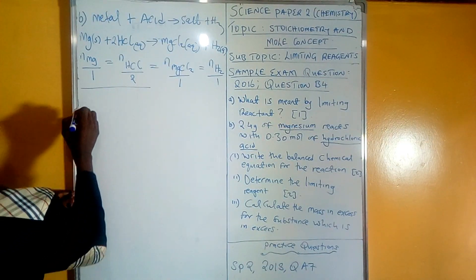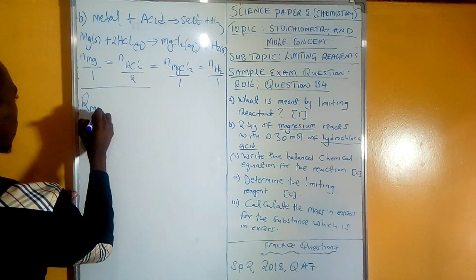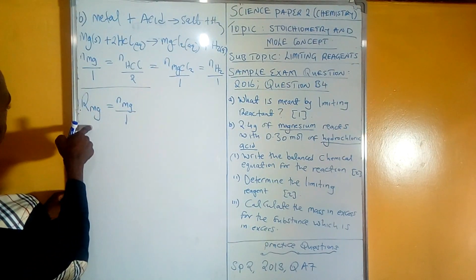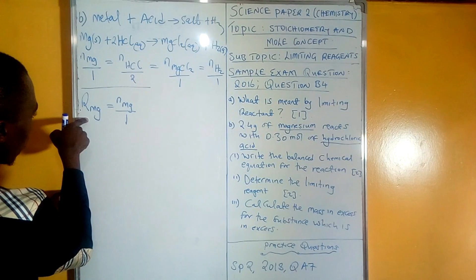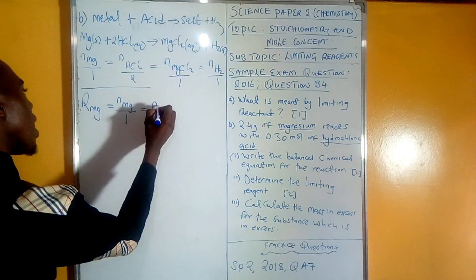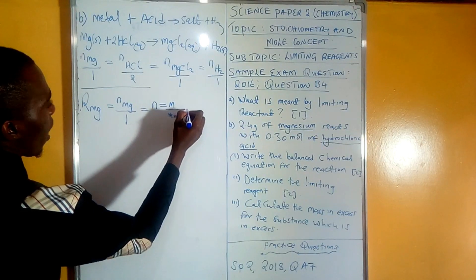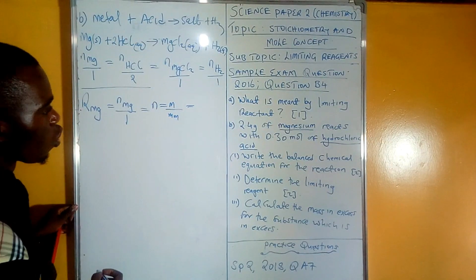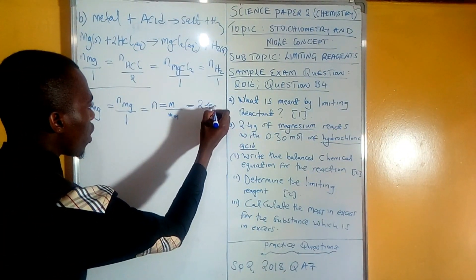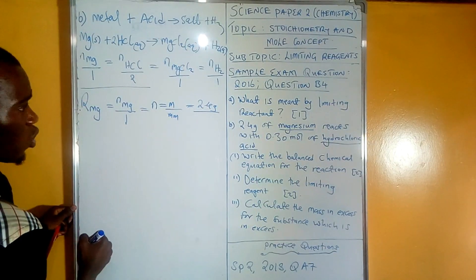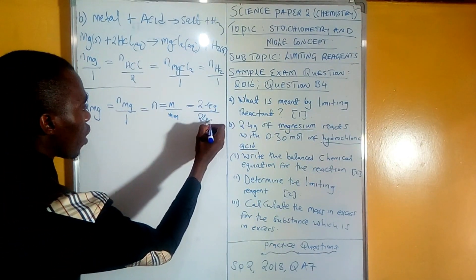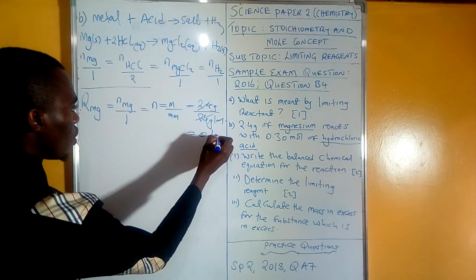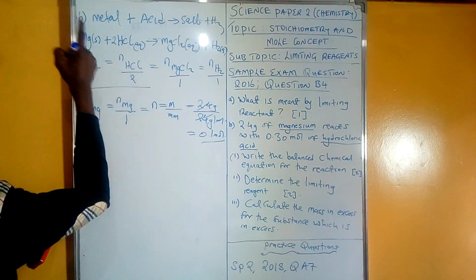We calculate R_Mg = moles of Mg / 1. We are testing whether magnesium is the limiting reagent. Using the formula: moles = mass / molar mass, that is 2.4 g divided by the molar mass of magnesium from the periodic table, which is 24 g/mol. This gives 0.1 moles. So R_Mg = 0.1 moles.